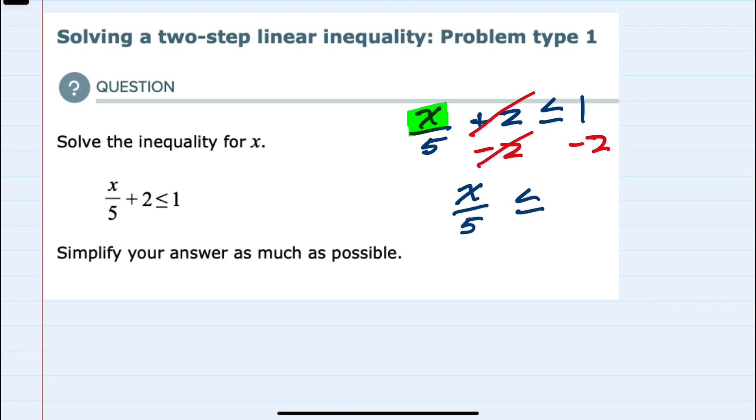We never change that sign when we're doing addition and subtraction. On the right-hand side, 1 minus 2 is minus 1. And then continuing to solve for x, I need to get rid of the divided by 5, and I can do so by multiplying both the left and right-hand sides of the equation by 5.